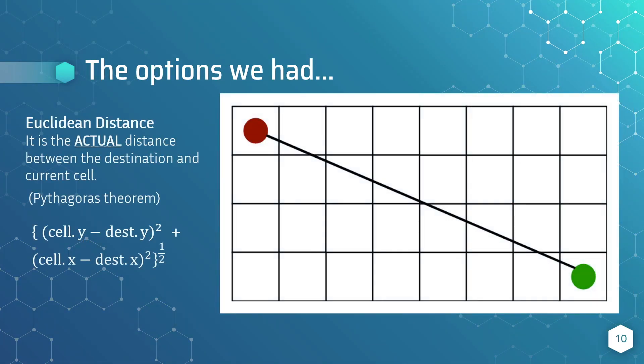The last option we have is the Euclidean distance, which is the actual distance between the node and destination. This is usually derived from Pythagoras' theorem, and hence the formula. This method is usually used when the robot can move at all angles.